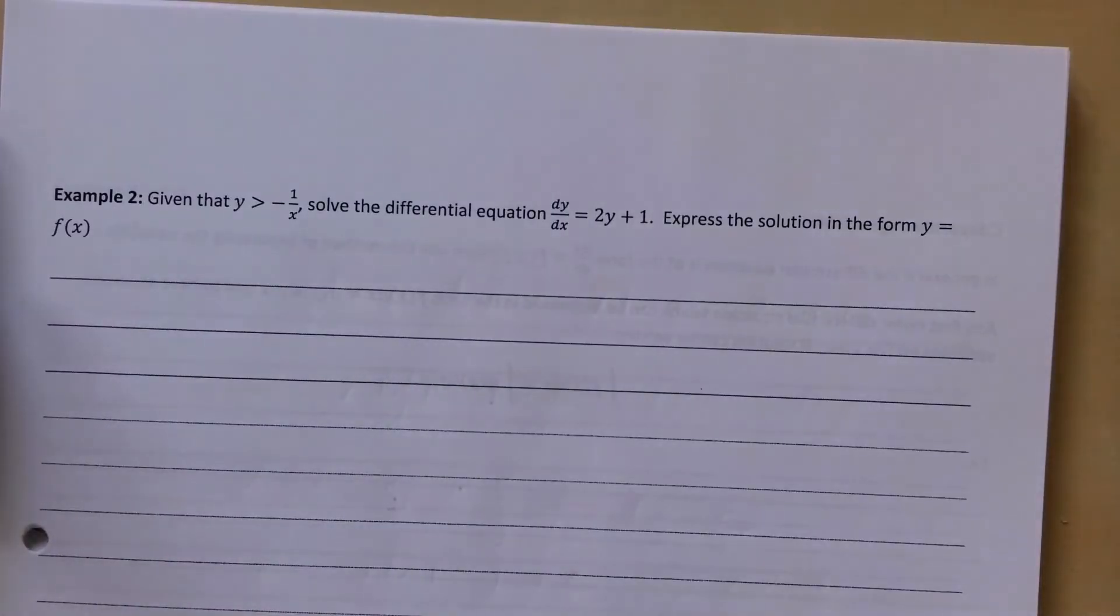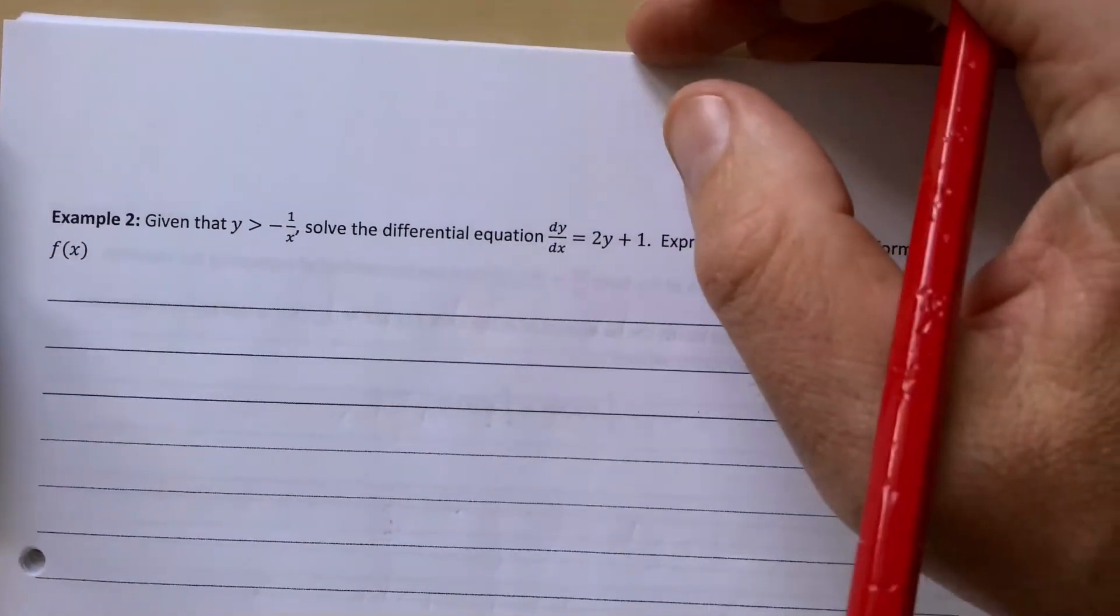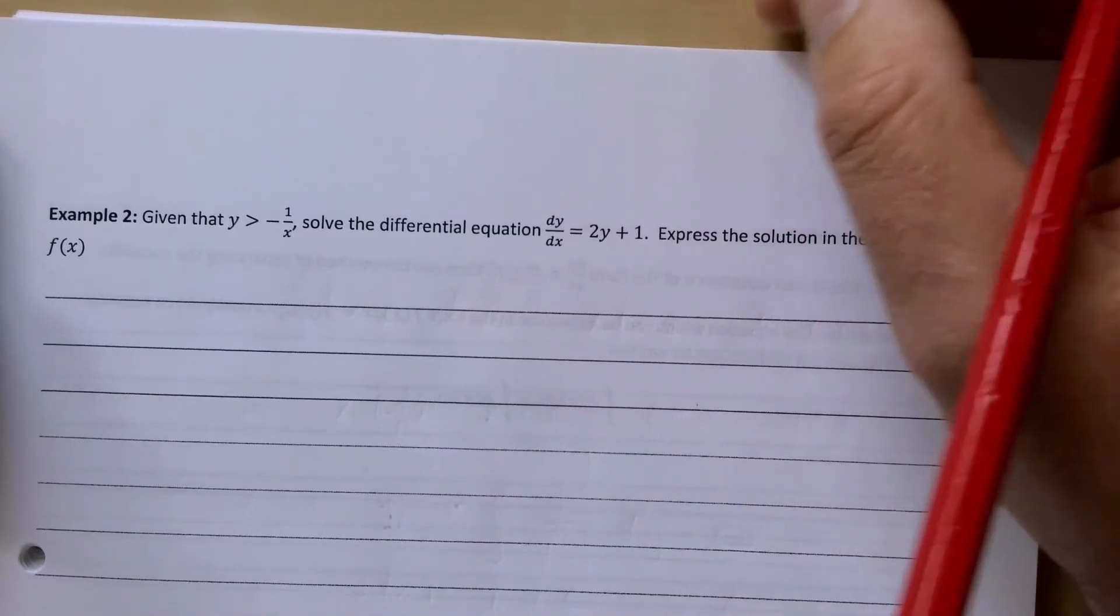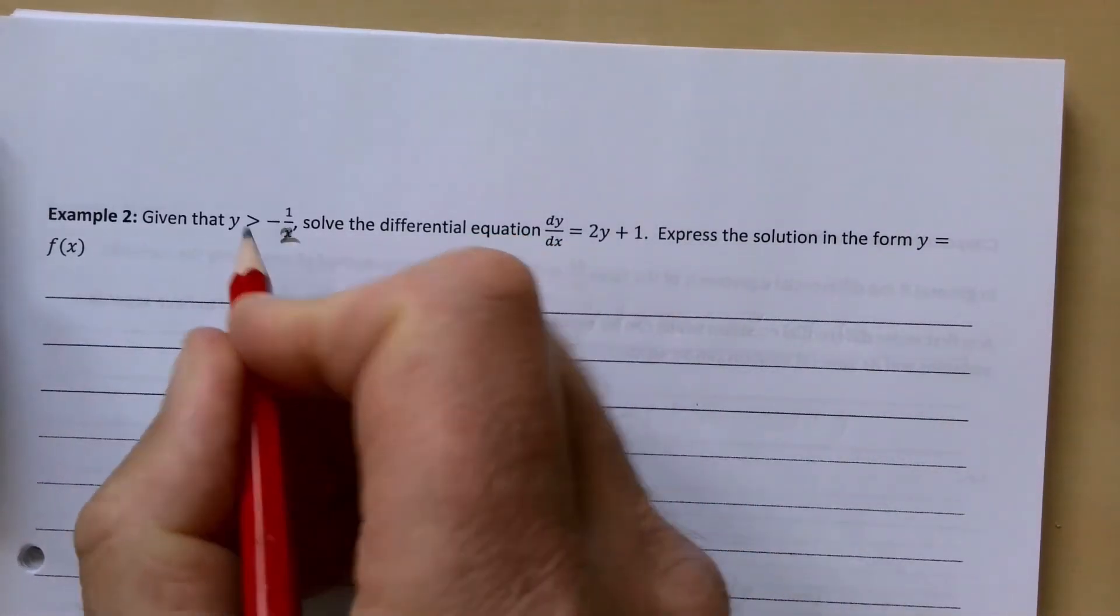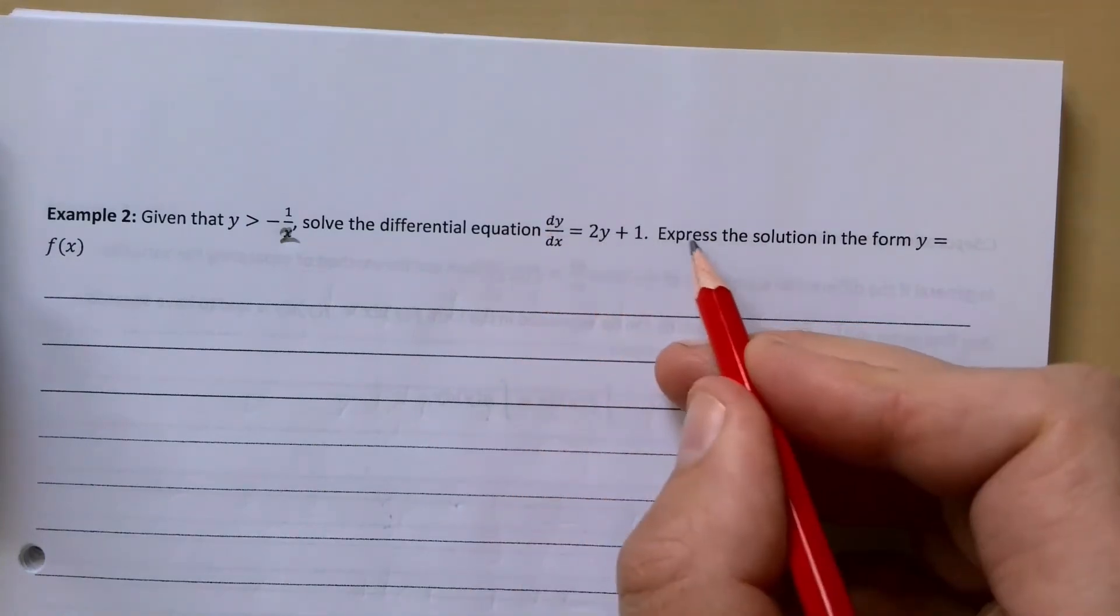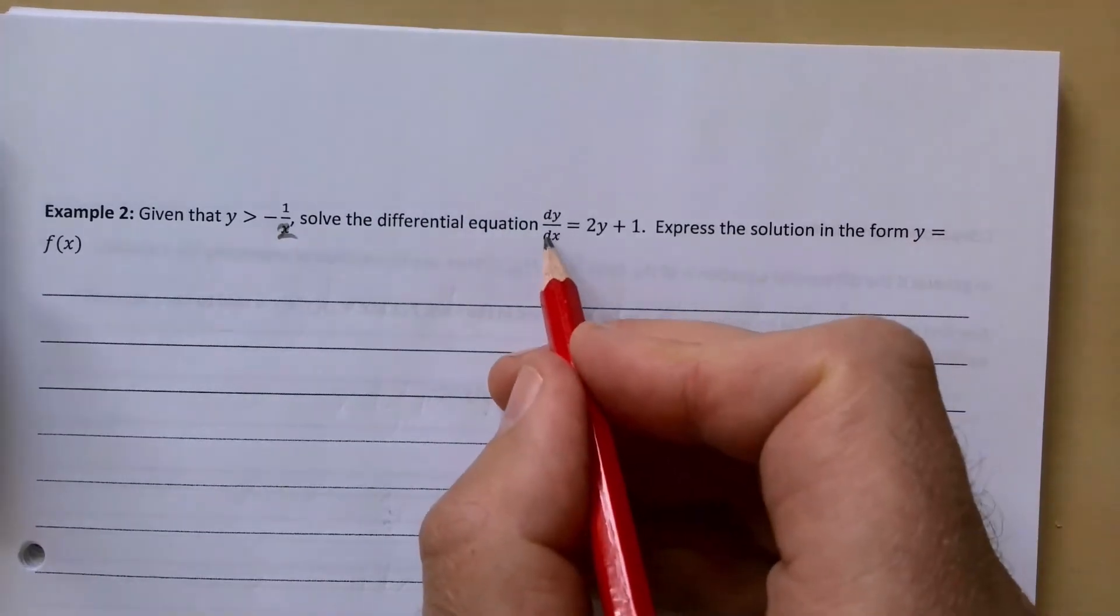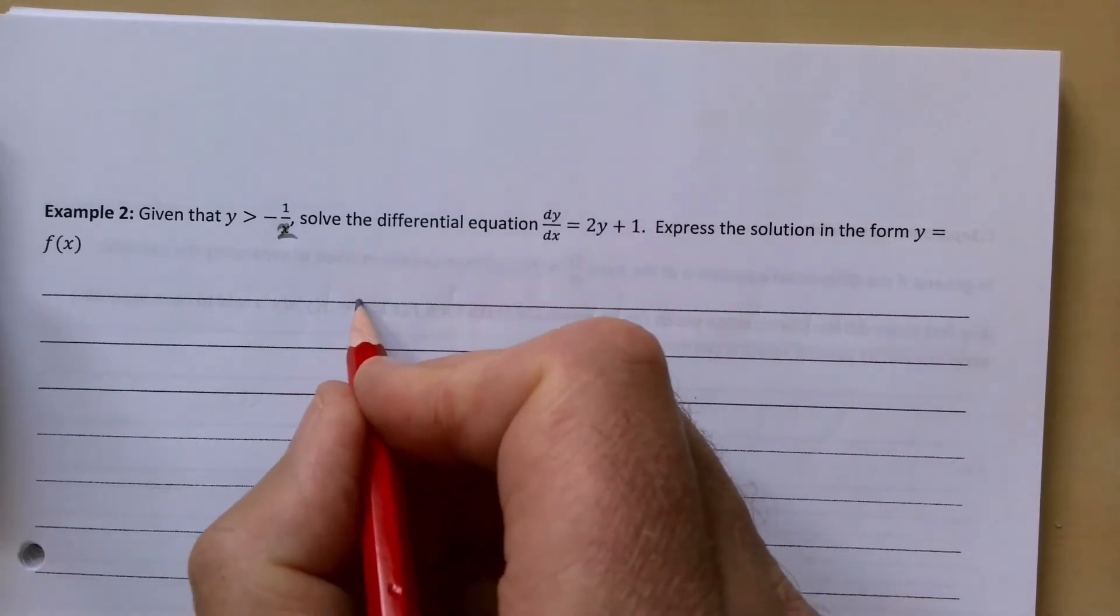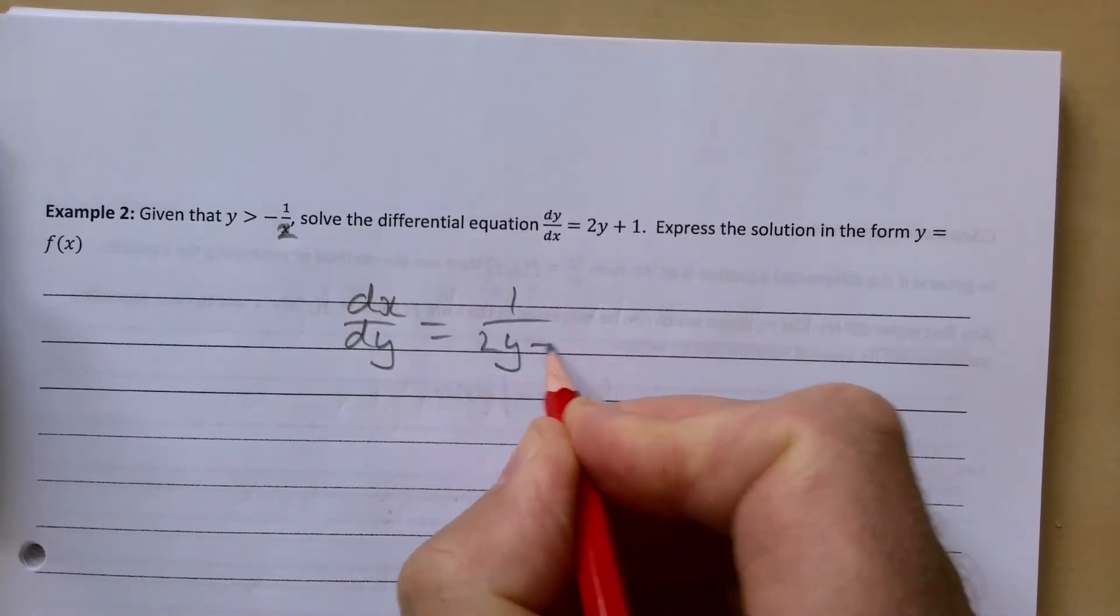Next example: given that x and y are greater than 0, solve the differential equation dy/dx = 2y + 1. I think that should be a 2 there, otherwise this bit messes up. dy/dx = 2y + 1. Express the solution in the form y = f(x). It's a function of y, so we're going to flip it upside down. dx/dy = 1/(2y + 1).